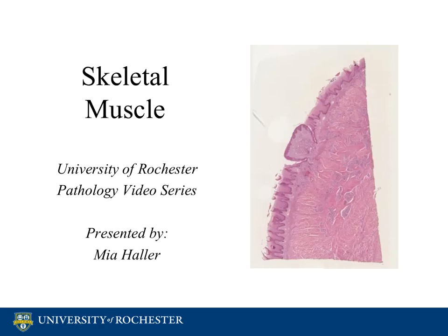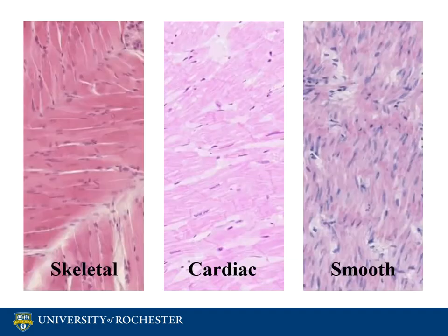Welcome to the University of Rochester Pathology video series. This video will review the normal histology of skeletal muscle. Muscle is broken down into three classifications: skeletal muscle, cardiac muscle, and smooth muscle. Each of these groups has characteristic differences in structure which lead to specialized functions. This video will focus solely on skeletal muscle.